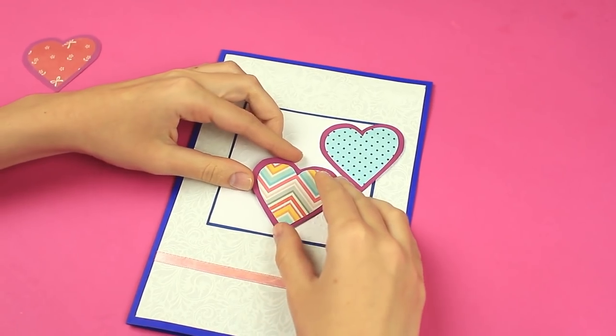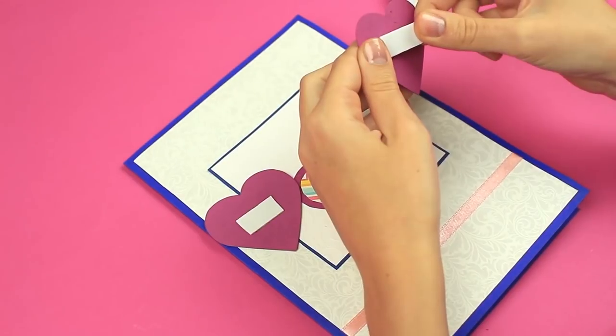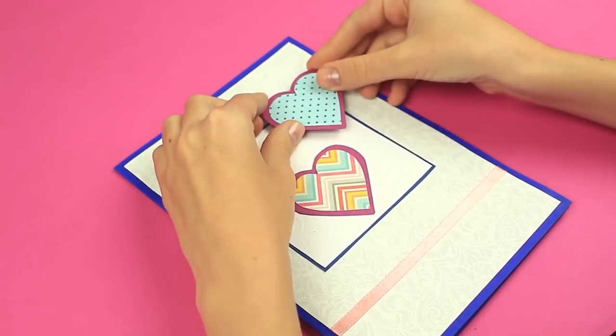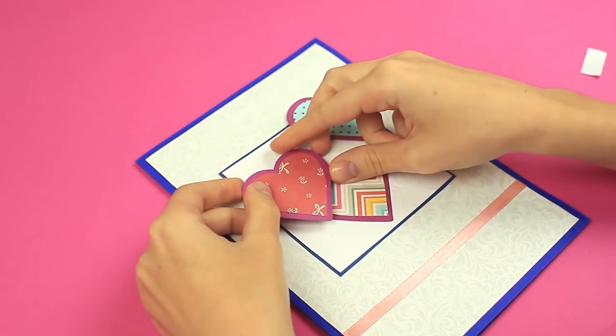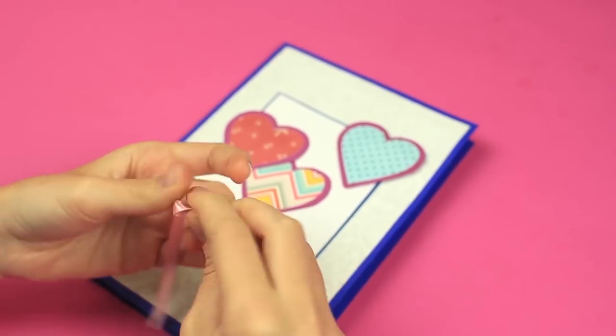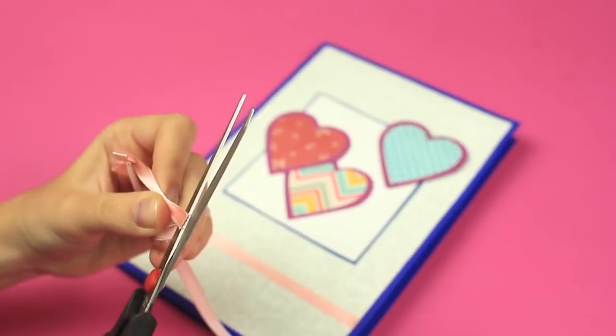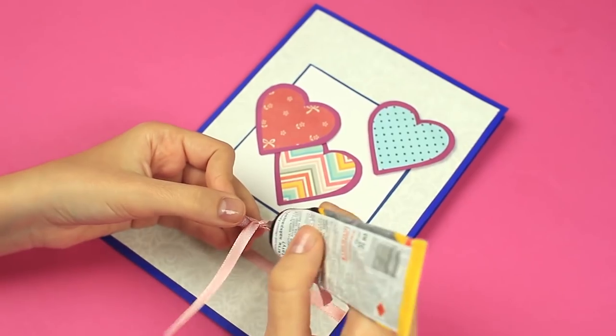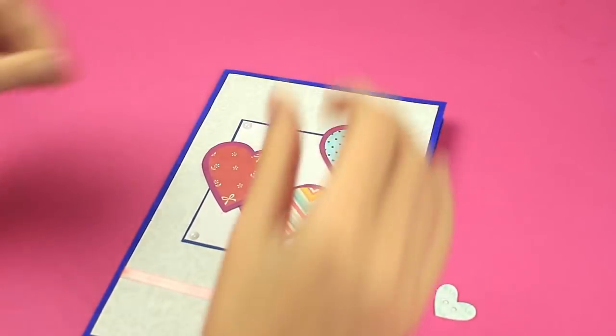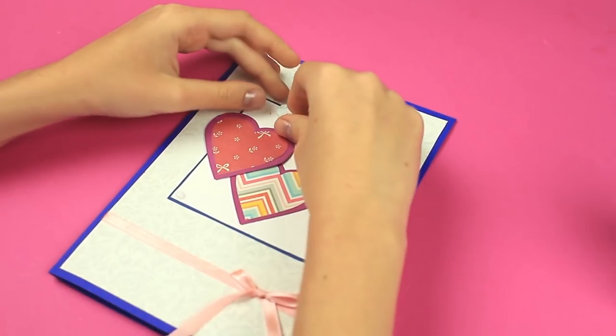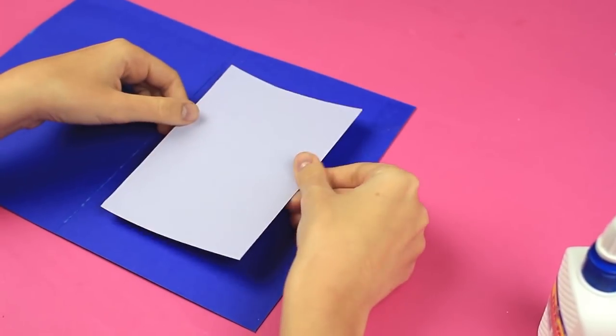Attach one element to the center of the card using white glue. Fasten the other two with double-sided foam tape. You can overlap the hearts to make the card more interesting. Tie a ribbon bow. Attach it with the multi-purpose glue. Add some embellishments and a wish note inside.